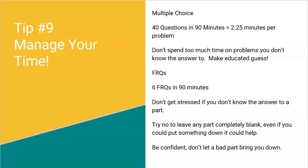Don't spend too much time on problems you don't know how to do — make an educated guess. Typically two of the five multiple choice options are just completely wrong if you think about what the problem is asking, giving you a one-third chance of guessing correctly. When you get to the FRQs, there are six of them. On the AP test it actually says to spend 25 minutes on question six.